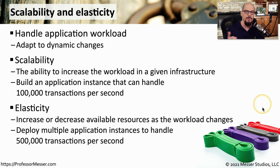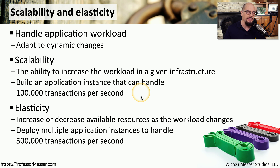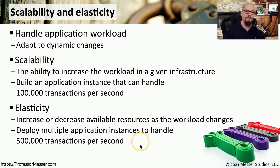As this application becomes more popular, we can create new application instances to increase the number of available transactions per second. If we know that our application scalability can support 100,000 transactions per second and we suddenly need 500,000 transactions per second, then we can take advantage of this elasticity and create five separate application instances all running simultaneously. If the application becomes less popular, elasticity works in the other direction and we can decrease the number of application instances, thereby decreasing the supported transactions per second.